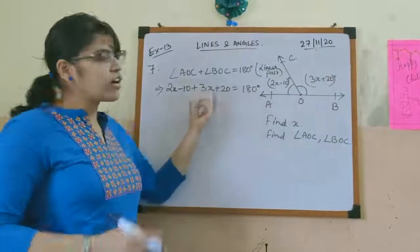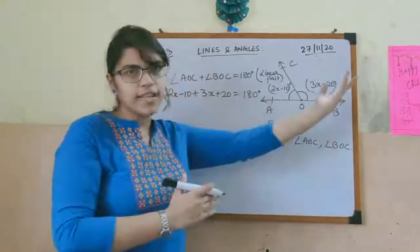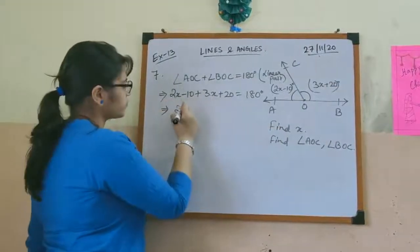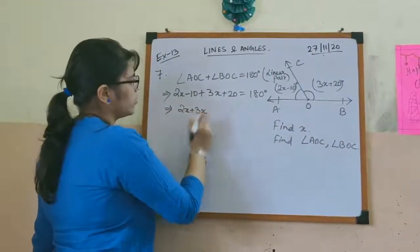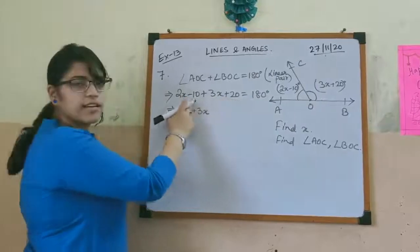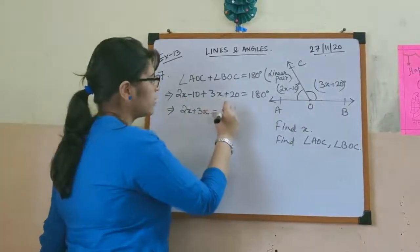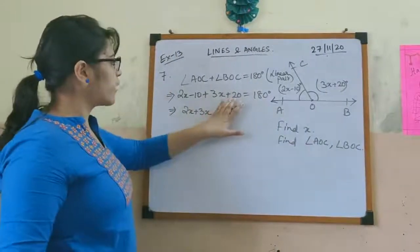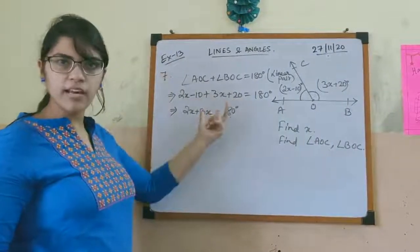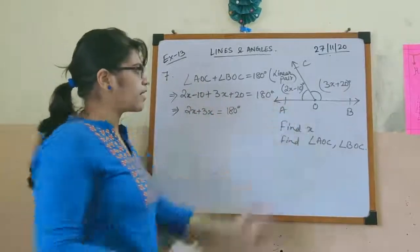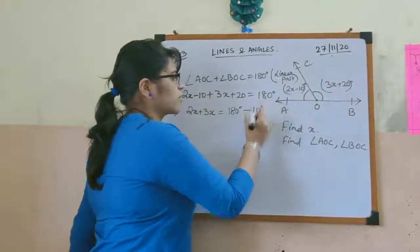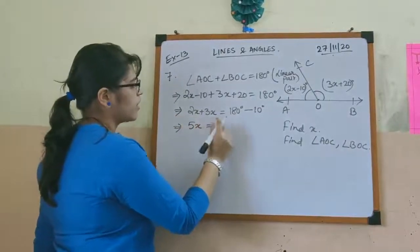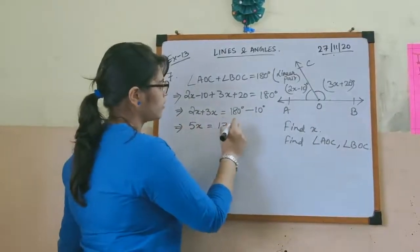Taking all x terms together: 2x plus 3x gives 5x. For the constants: 20 minus 10 gives plus 10. Shifting 10 to the other side gives minus 10, so 5x equals 180 minus 10, which is 170.